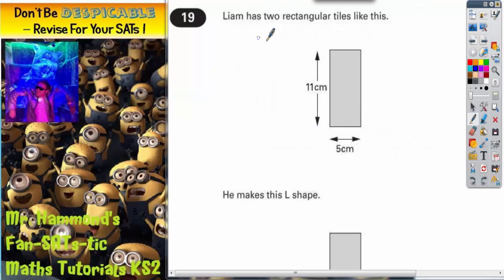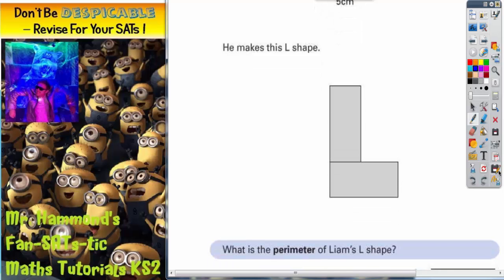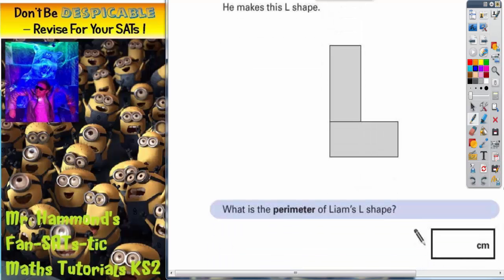Question 19. Liam has two rectangular tiles like this. So the long side is 11 and the shorter side is 5cm. He makes this L shape. What is the perimeter of Liam's L shape?